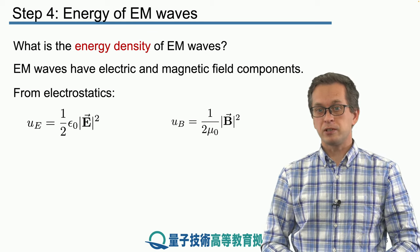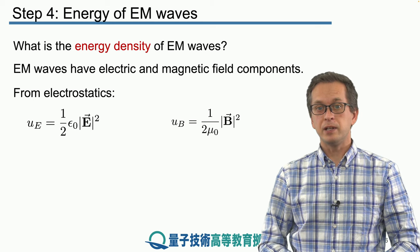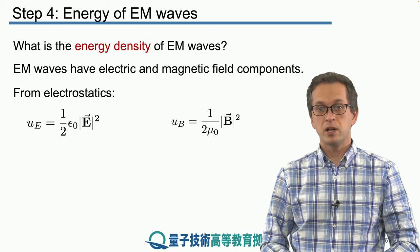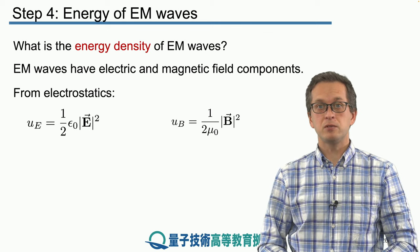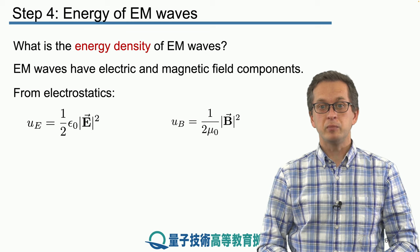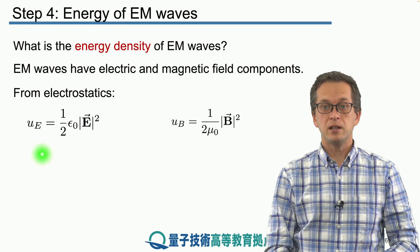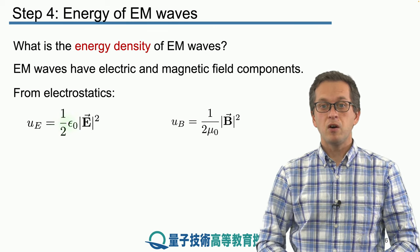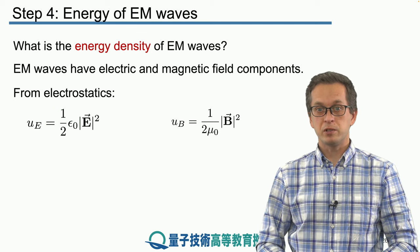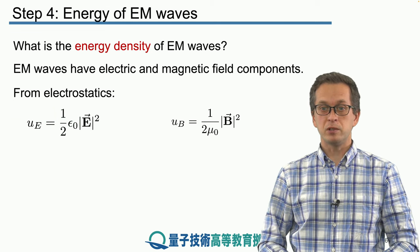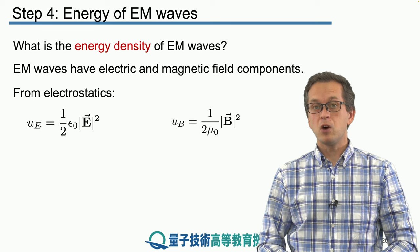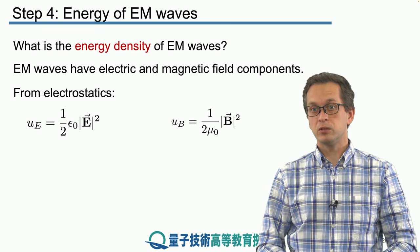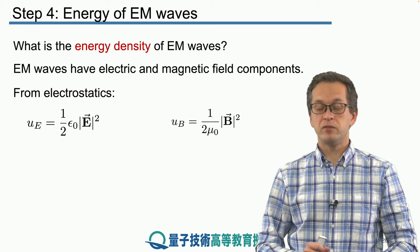We know from electrostatics that the electric energy density stored between two infinitely long charged plates is given by the magnitude squared of the electric field. In particular, u_E, the energy density of the electric field, is one half times epsilon naught times the modulus of E squared. Similarly, for the magnetic field, the energy density is given by a similar expression: one over two mu naught times the magnitude squared of the B field.